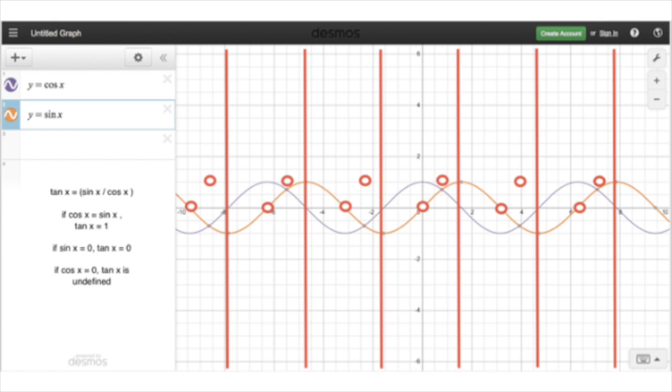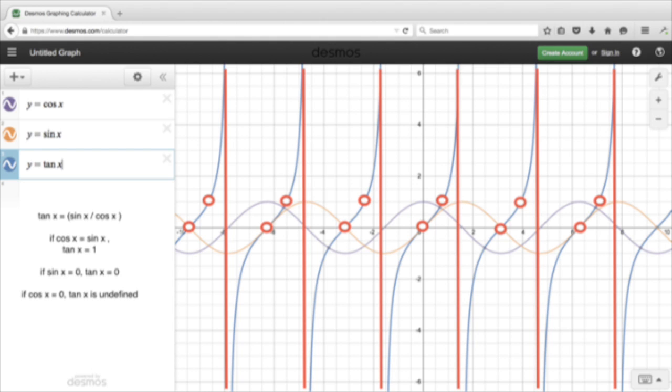This is what it looks like with the curve coming, getting closer and closer to the asymptotes above and below, but never actually getting there. So the curve looks like that.